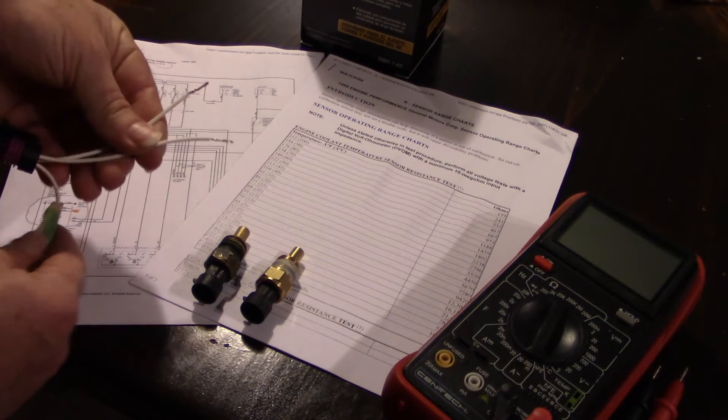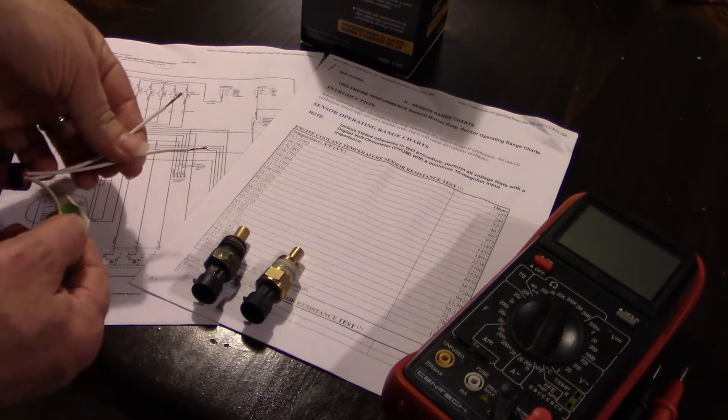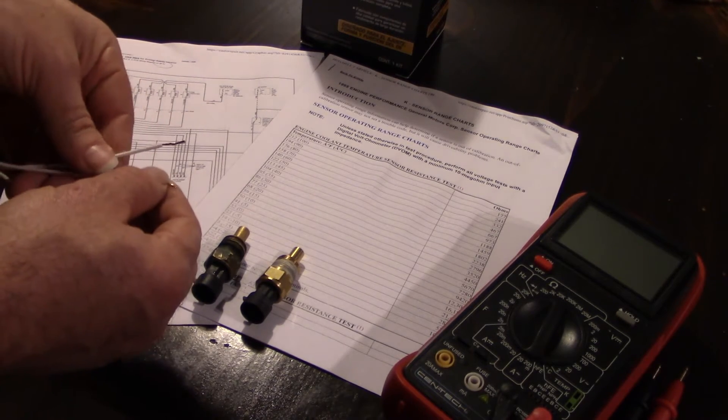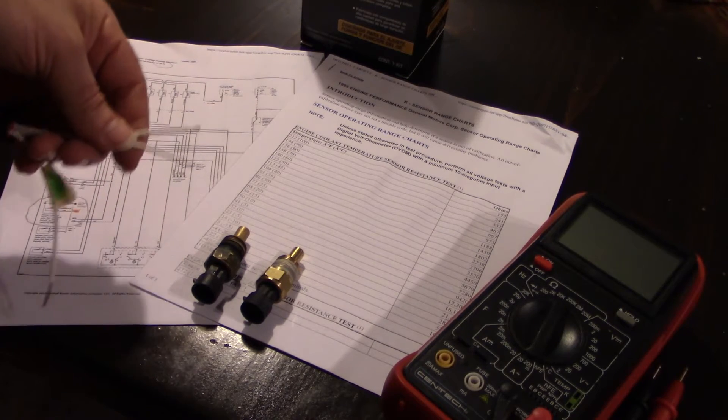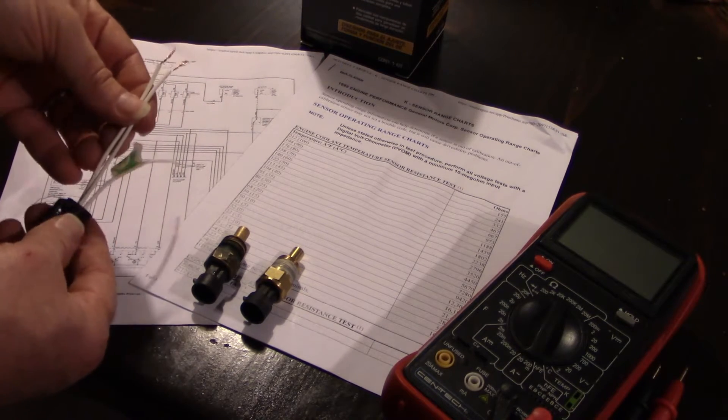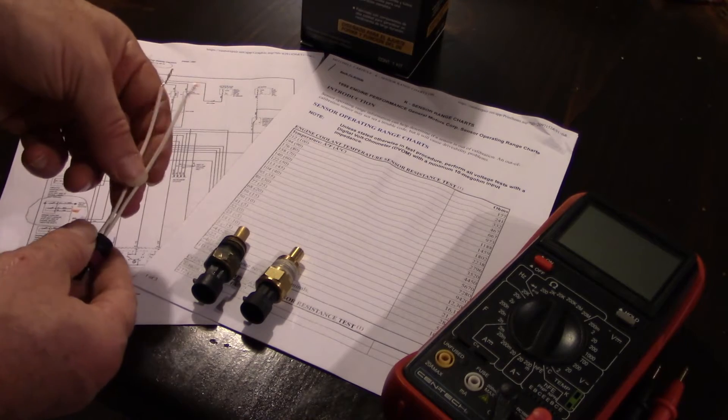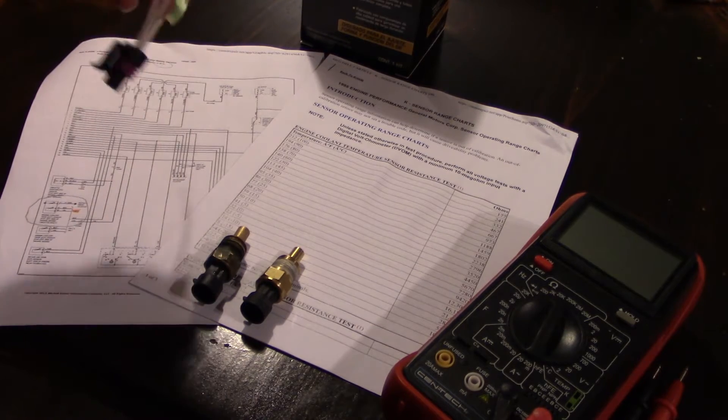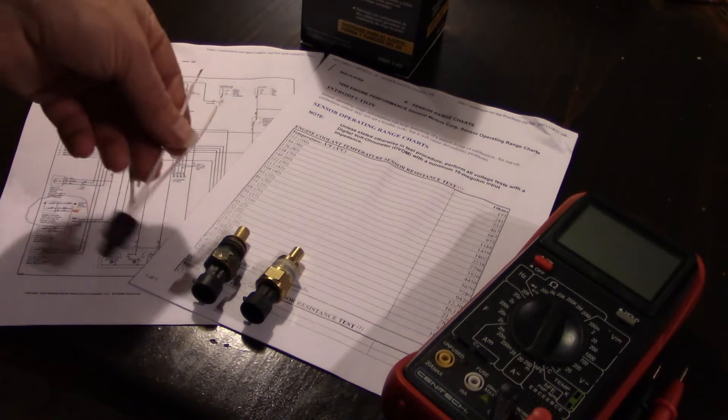It's these two others that we're going to test, so we're going to ignore this green one. These are the ones that communicate with the ECM and talk about the engine temperature so that it can make its necessary adjustments to the fuel mixture and things like that.